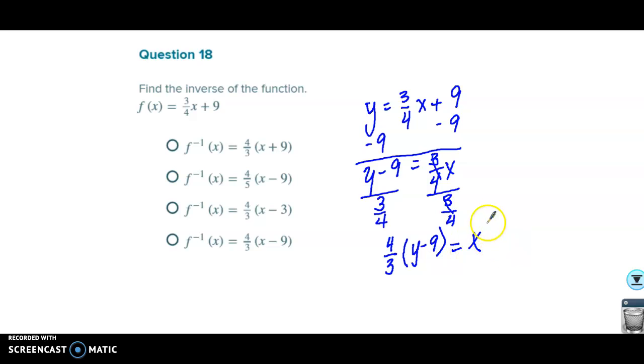We change this to f negative 1, x. Sorry, my pen's not working great. And remember, change that y back to an x. 4 thirds x minus 9 is the solution. All right. 4 thirds x minus 9. Winner, winner, chicken dinner right there.